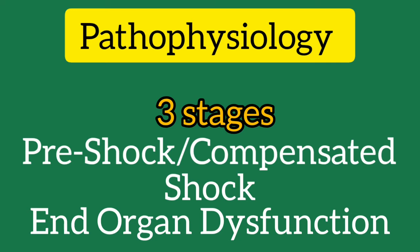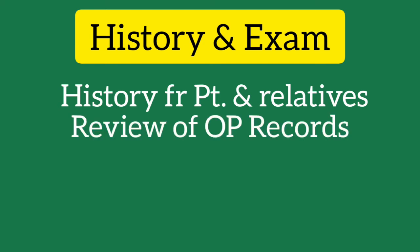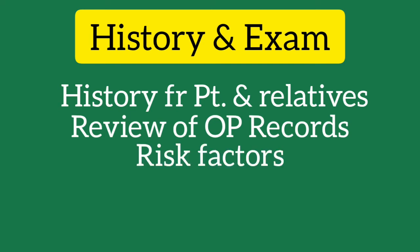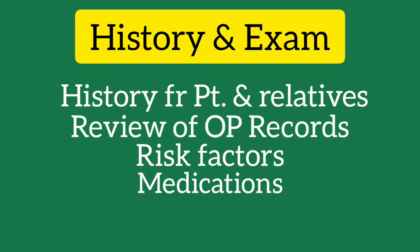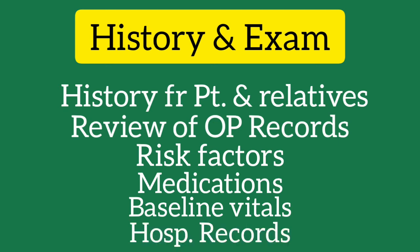A focused history should be obtained from the patient if possible and/or the patient's relatives. A review of the patient's outpatient medical records, including information regarding risk factors, medications, and baseline vital signs including blood pressure, as well as hospital medical records, can give valuable clues regarding the patient's risk for shock and potential etiology. Clinical features and symptoms can vary according to the type and stage of shock.